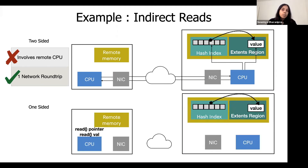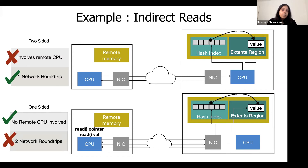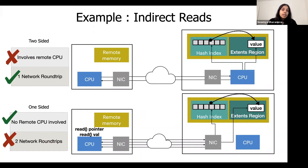Suppose we use one-sided operations instead. We'd need to issue one one-sided RDMA read to get the address of where the value is located, and another one-sided RDMA read to actually retrieve the value. The benefit here is that there's no CPU involved, but we'd need at least two network roundtrips to process a GET operation. Note that the number of network roundtrips would increase if there were any hash collisions involved. Additional network roundtrips can make one-sided implementations slower.